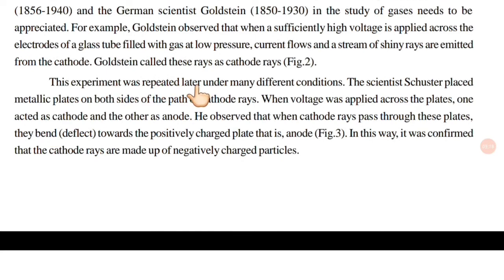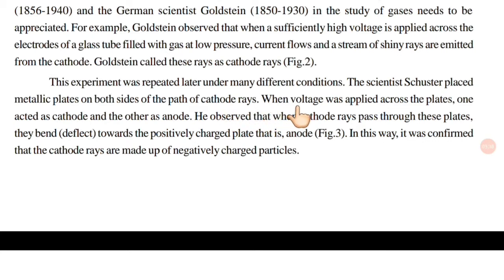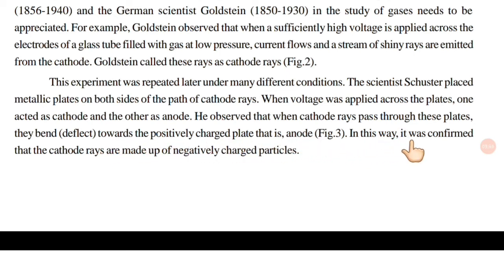This experiment was repeated later under many different conditions. The scientist Scuttester placed metallic plates on both sides of the path of cathode rays. When voltage was applied across the plates, one acted as cathode and the other as anode. He observed that when cathode rays pass through these plates, they bend towards the positively charged plate, that is the anode. In this way, it was confirmed that the cathode rays are made of negatively charged particles.